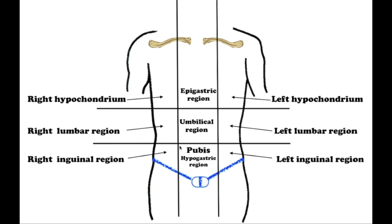Finally, the hypogastrium is divided into the right inguinal region, the pubic region, and the left inguinal region.